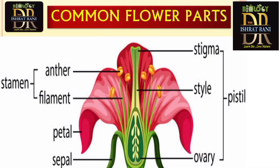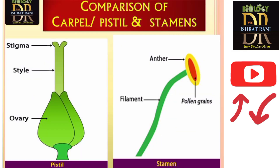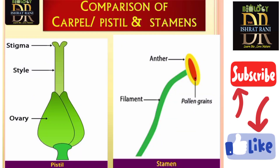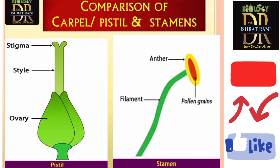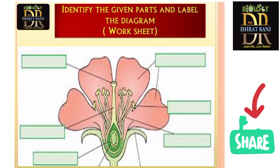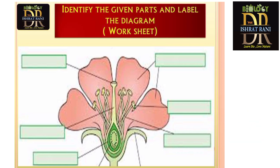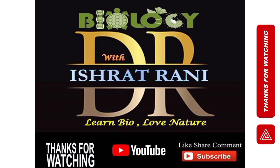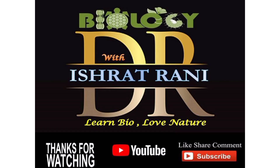To summarize, you will learn these parts of the flower — including the stamen and carpel, and their respective components. Here I have a worksheet for you for feedback on what you have learned about the typical parts of a flower. For more videos, subscribe to my channel. Thank you so much.